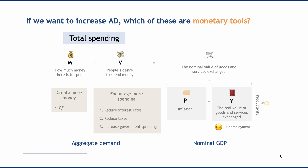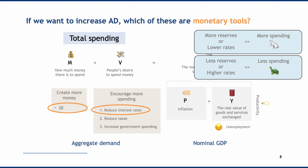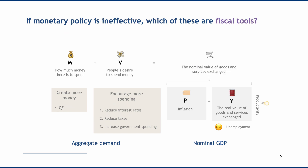Thinking about which tools are monetary policy, quantitative easing and changing interest rates are both monetary policy tools administered by the central bank. If a central bank wants to boost aggregate demand, it can introduce more reserves through QE or reduce interest rates. More reserves or lower rates lead to more spending; fewer reserves or higher interest rates lead to less spending. Depending on whether the central bank wants looser or tighter monetary policy, it uses one of these two main tools.